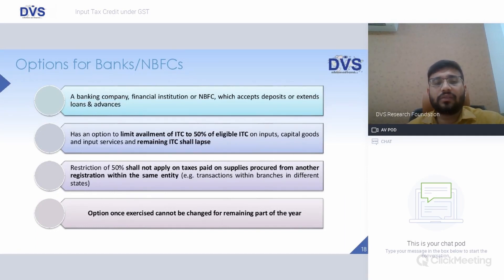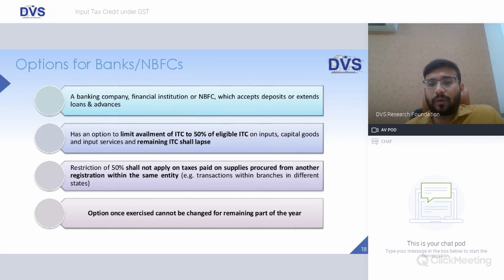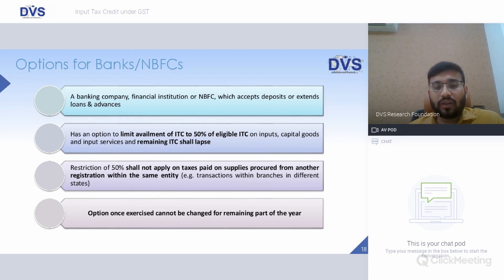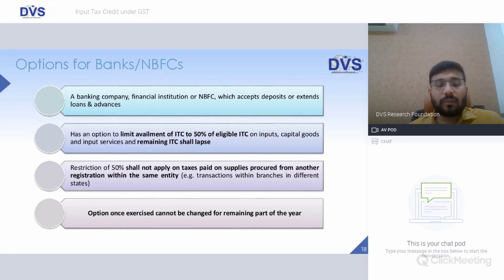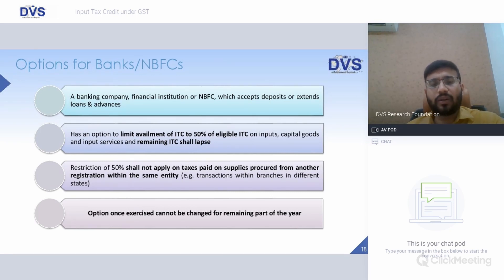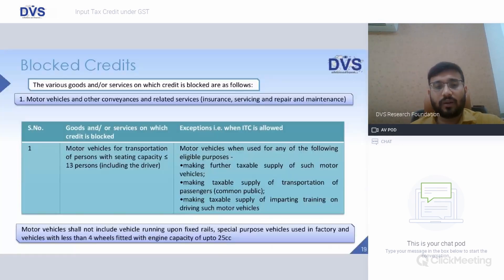Option for banks, FIs, and NBFCs: a banking company, financial institution, or NBFC which accepts deposits or extends loans and advances has the option to avail only up to 50% of eligible ITC on inputs, capital goods, and input services. The balance ITC shall lapse. However, the 50% criterion does not apply to taxes paid on supplies procured from another registration within the same entity. Once exercised, the option cannot be changed for the remaining part of the year.